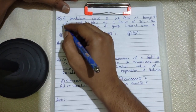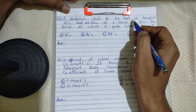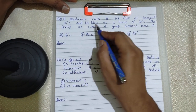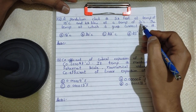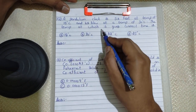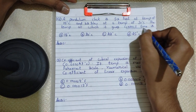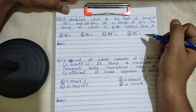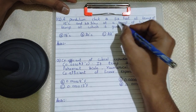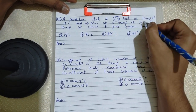A pendulum clock is 5 seconds fast at a temperature of 15 degrees Celsius and 10 seconds slow at a temperature of 30 degrees Celsius. We have to find the temperature at which it gives correct timing. Now let us come to the trick — first of all, note these two numbers: 5 seconds and 30 degrees Celsius.